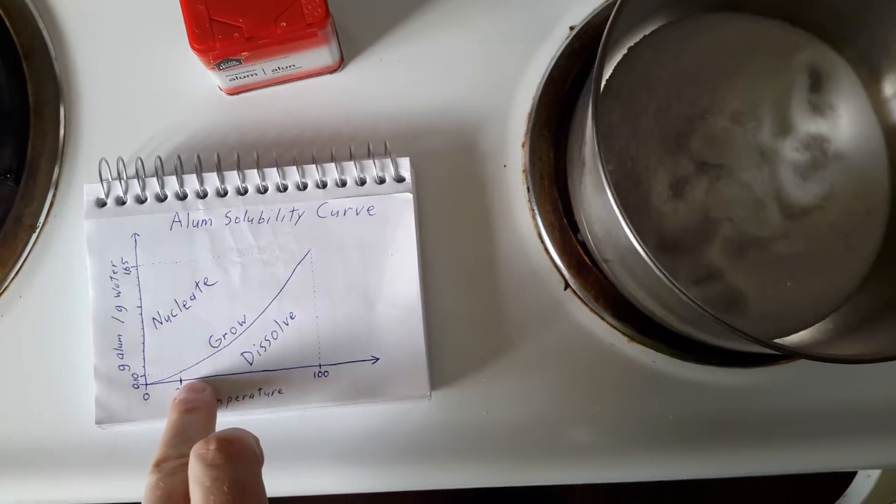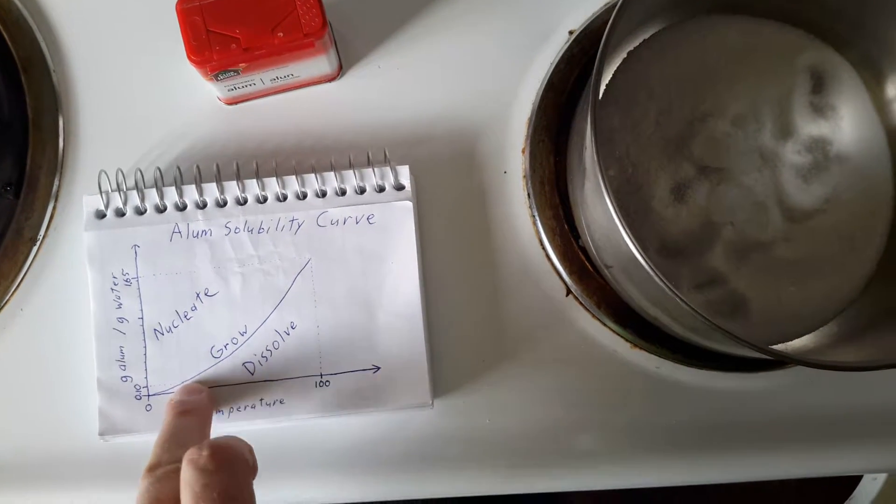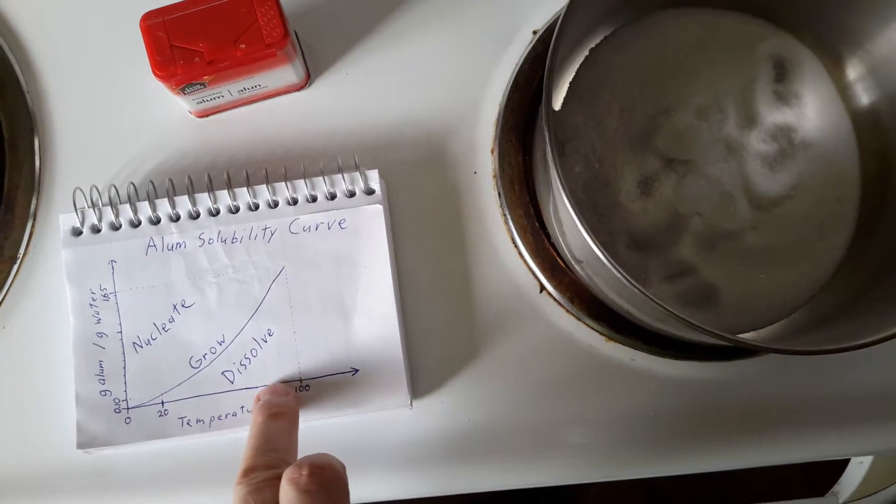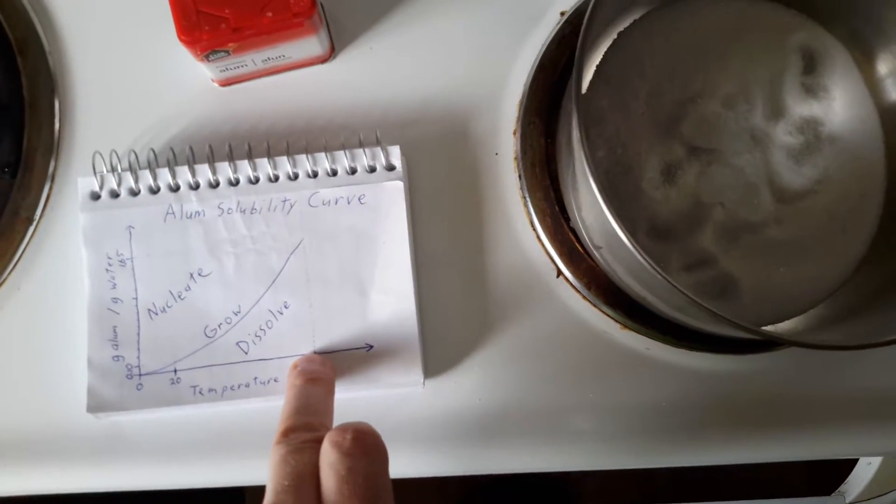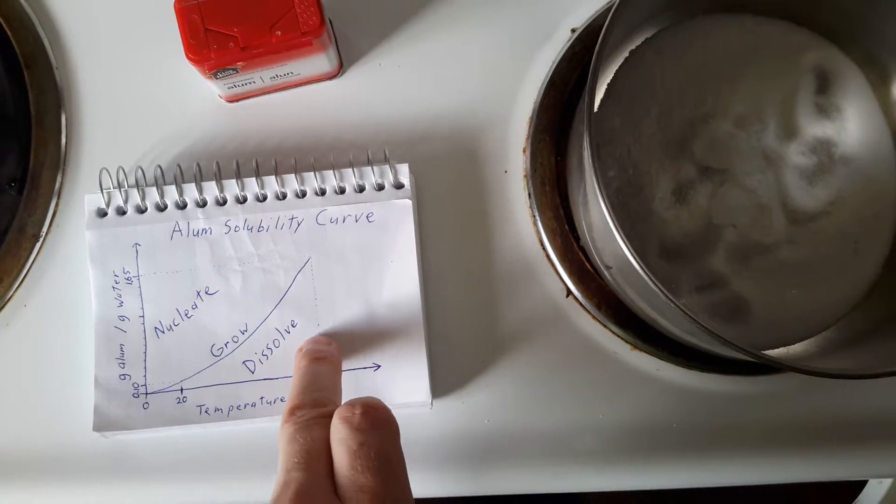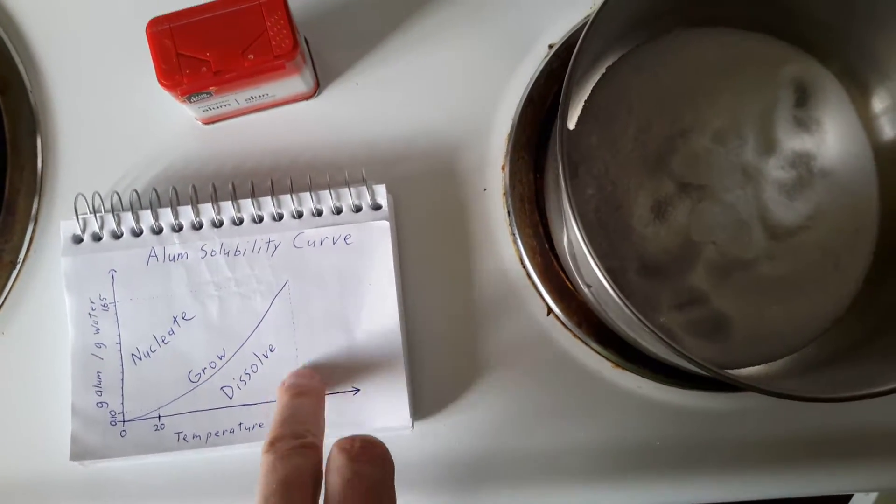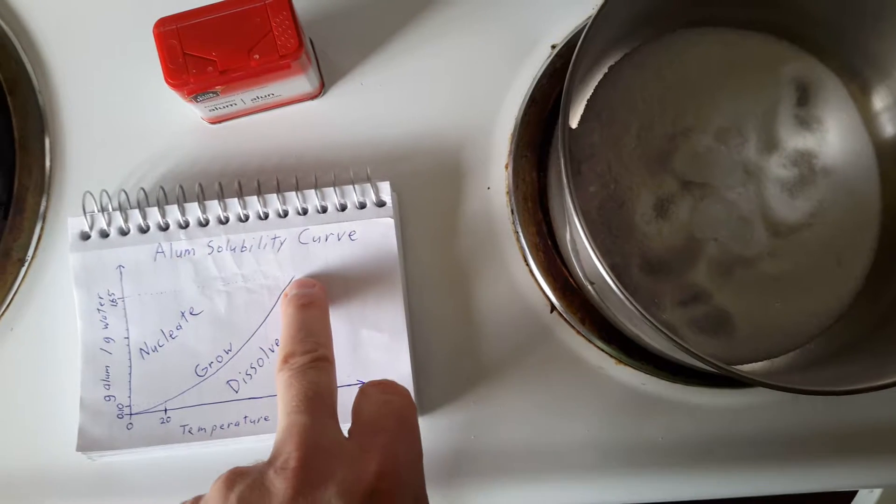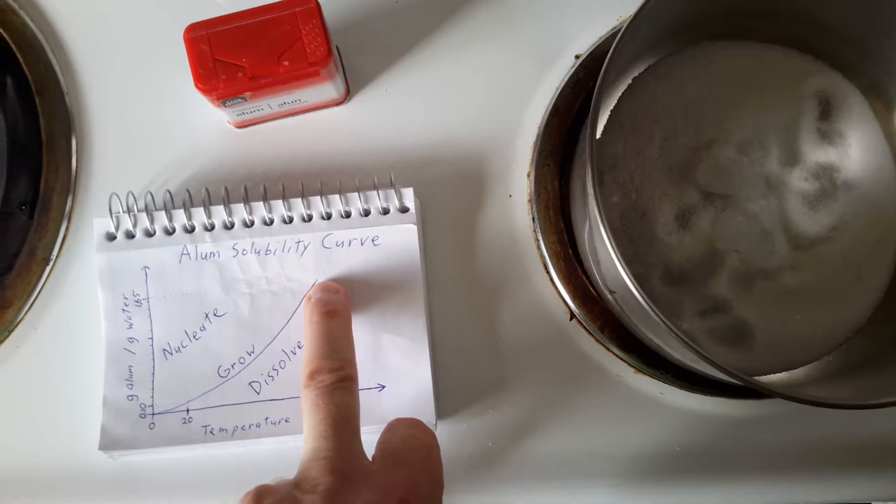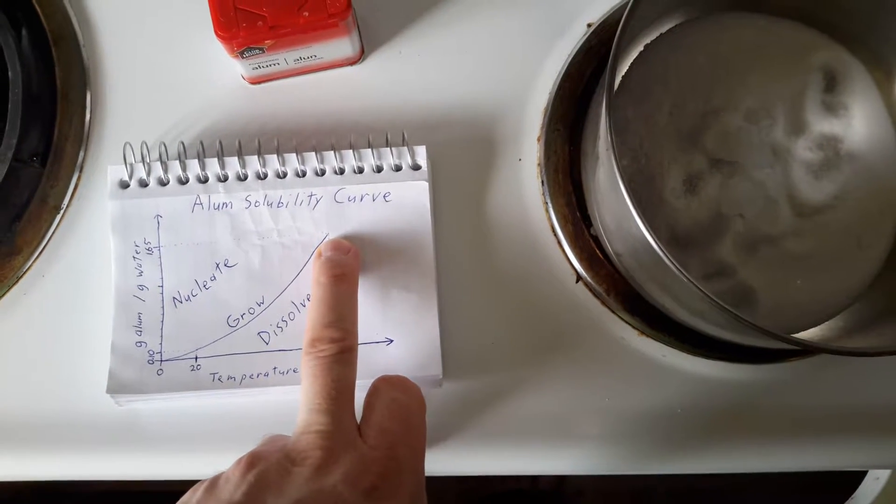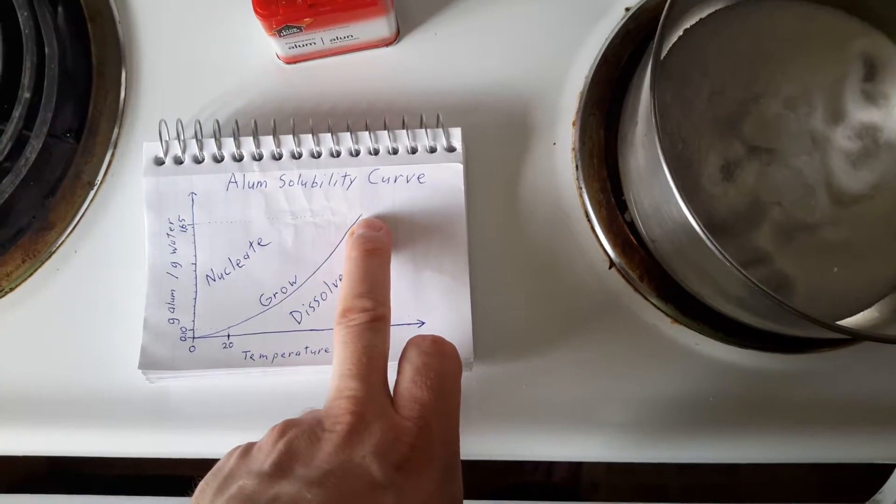The way I'm going to make sure that I get there is I'm actually going to heat the water all the way up to the boiling point, and that will increase the amount of alum that I can dissolve into the water. So at 100 degrees Celsius, I can dissolve about 1.65 grams of alum per gram of water, so I can actually have more alum than water.